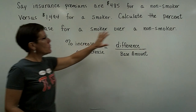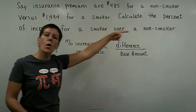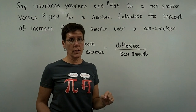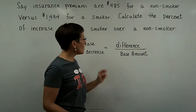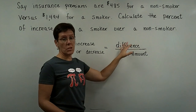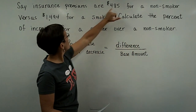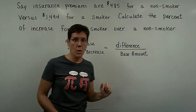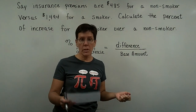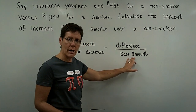What we want to do is see what the percent increase is for that smoker over a non-smoker. Whether it's an increase or a decrease problem, you're always going to find a difference between the two scenarios. We are going to increase the cost for a smoker — it's going to go up actually a little bit more than $1,000. And then we want to compare it to the base amount.